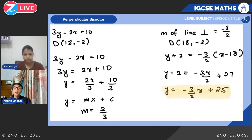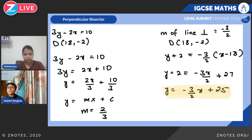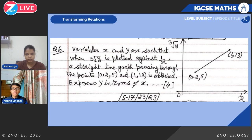For the second part, we need the equation of the line through D perpendicular to 3y minus 2x = 10. Converting 3y minus 2x = 10 to y = mx + c form gives the gradient as 2/3. The gradient of a perpendicular line is the negative reciprocal: minus 3 over 2. Using point D (18, -2) and gradient minus 3/2: y + 2 = (-3/2)(x - 18), which simplifies to y = (-3/2)x + 25.